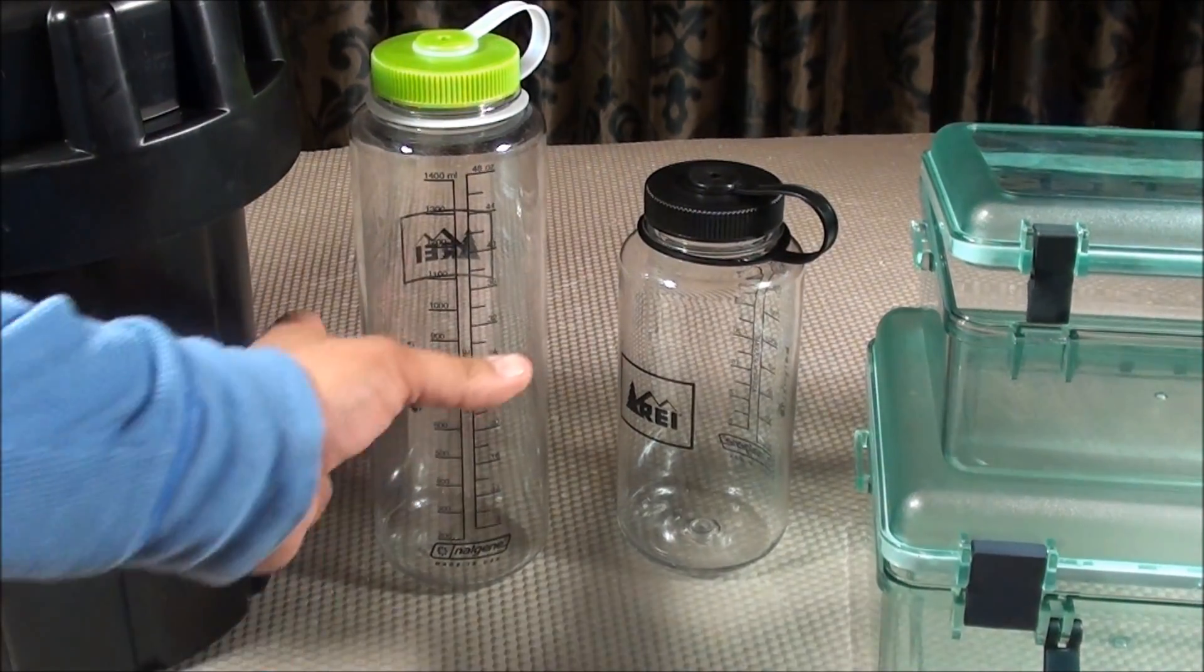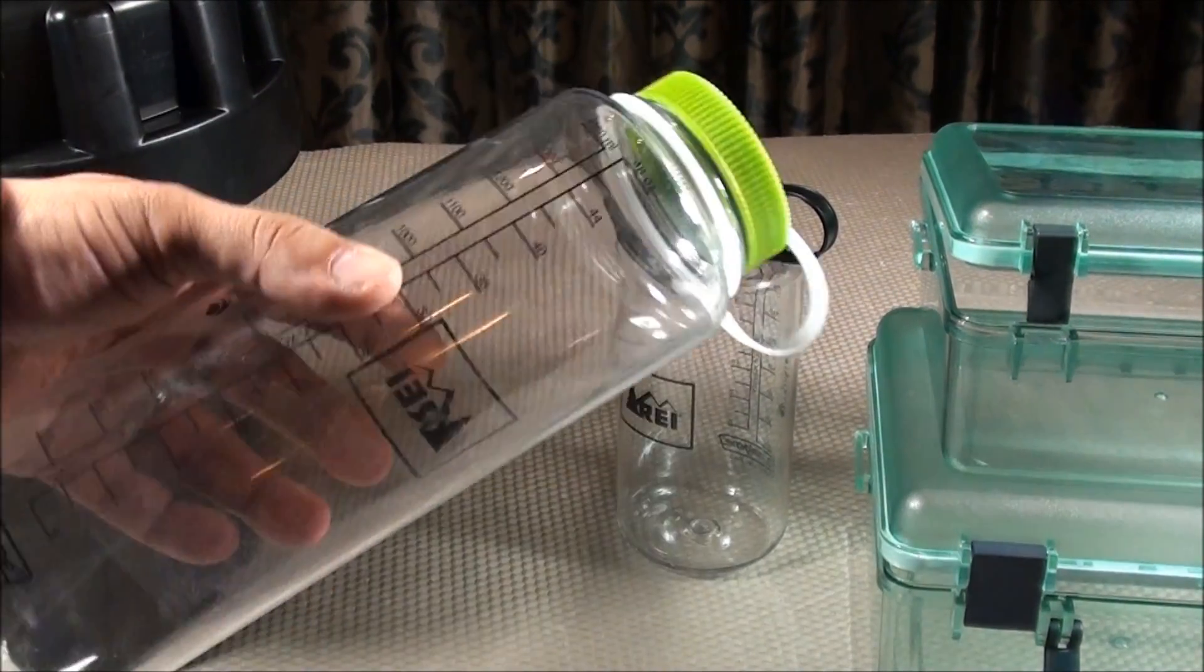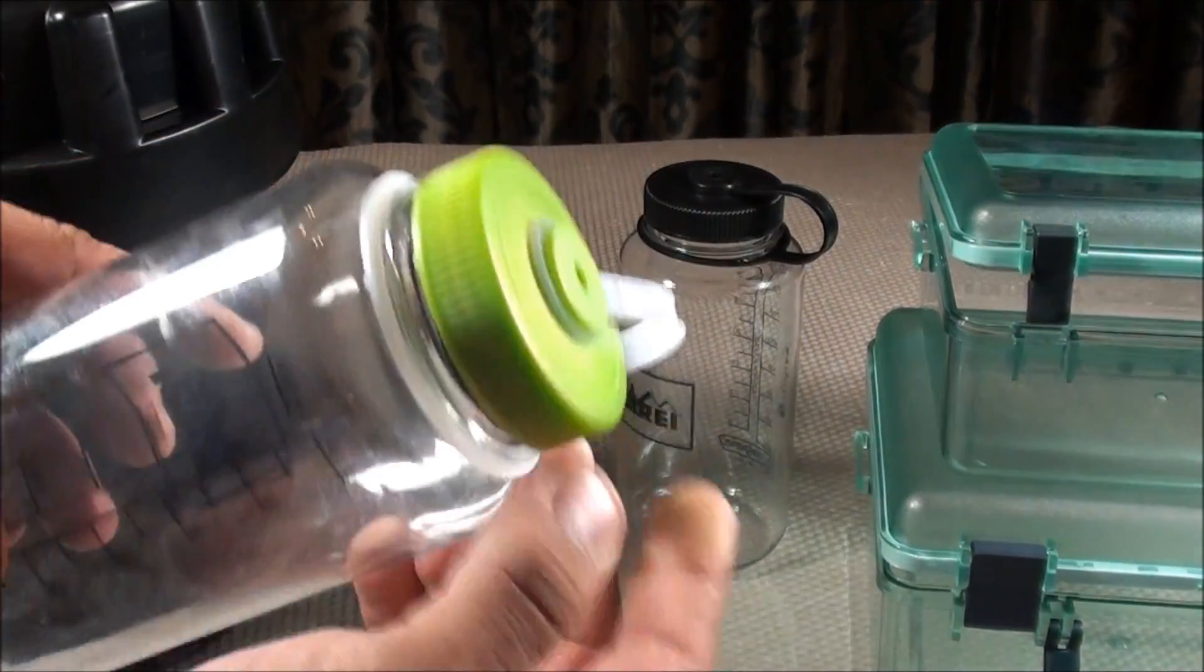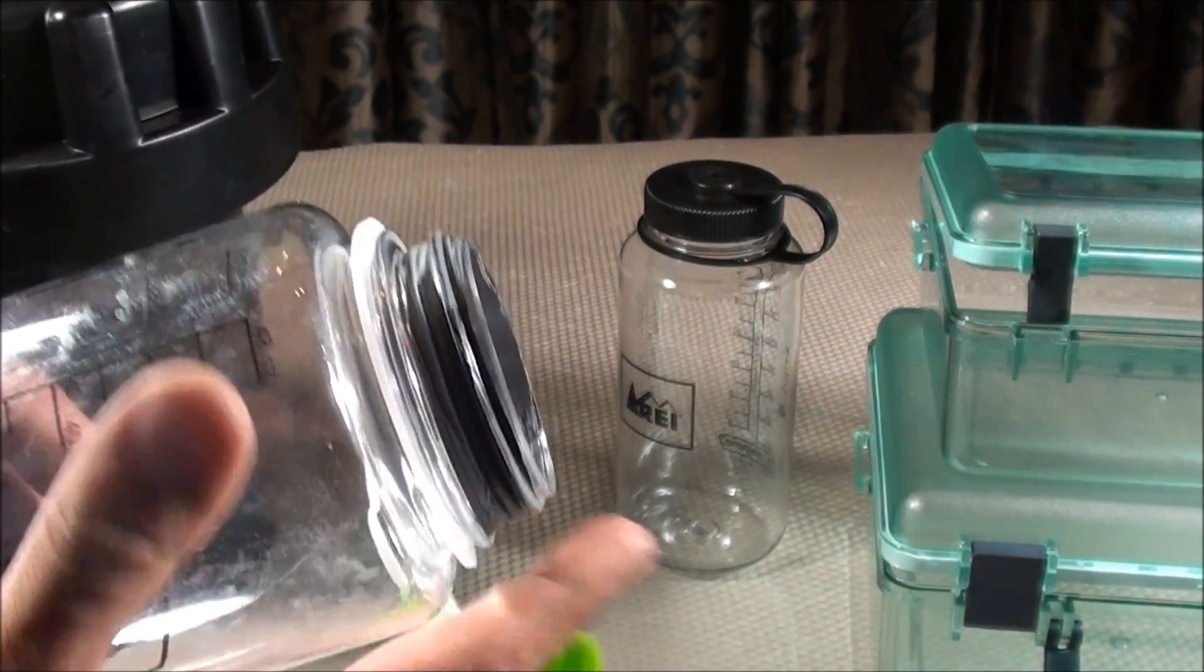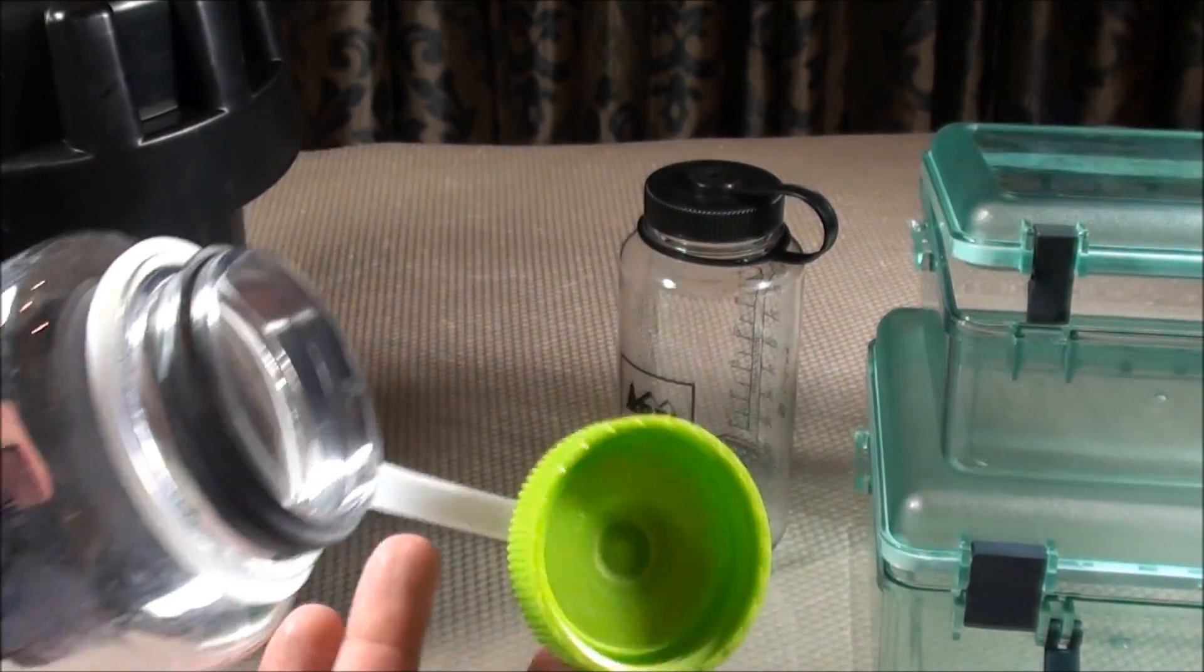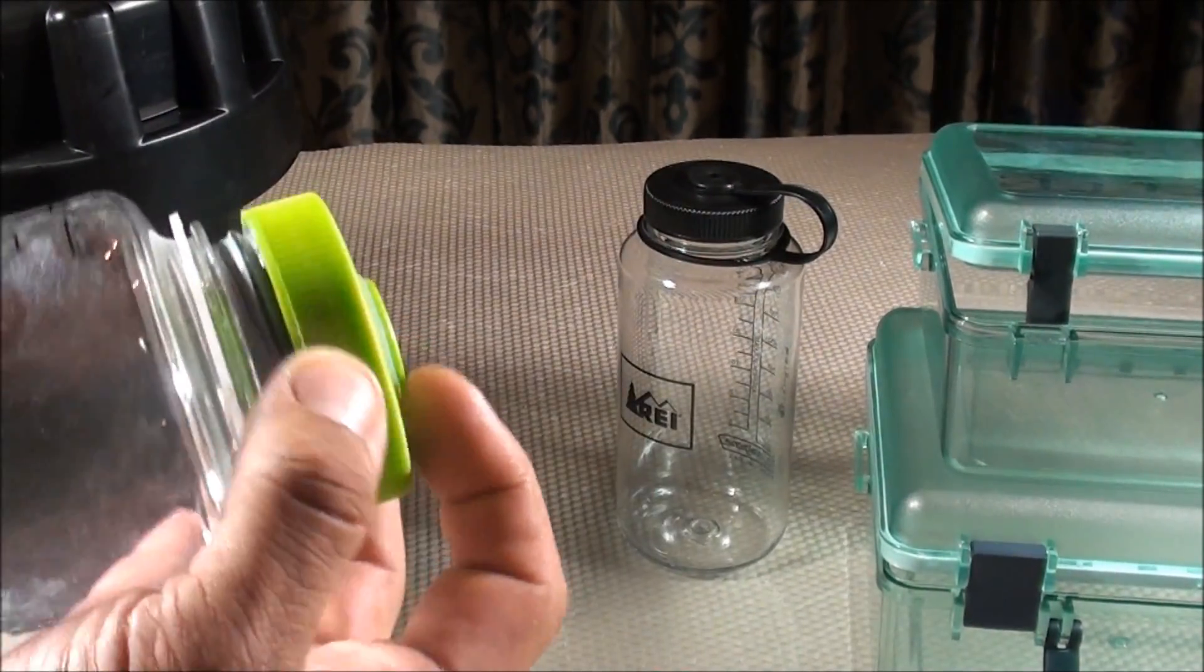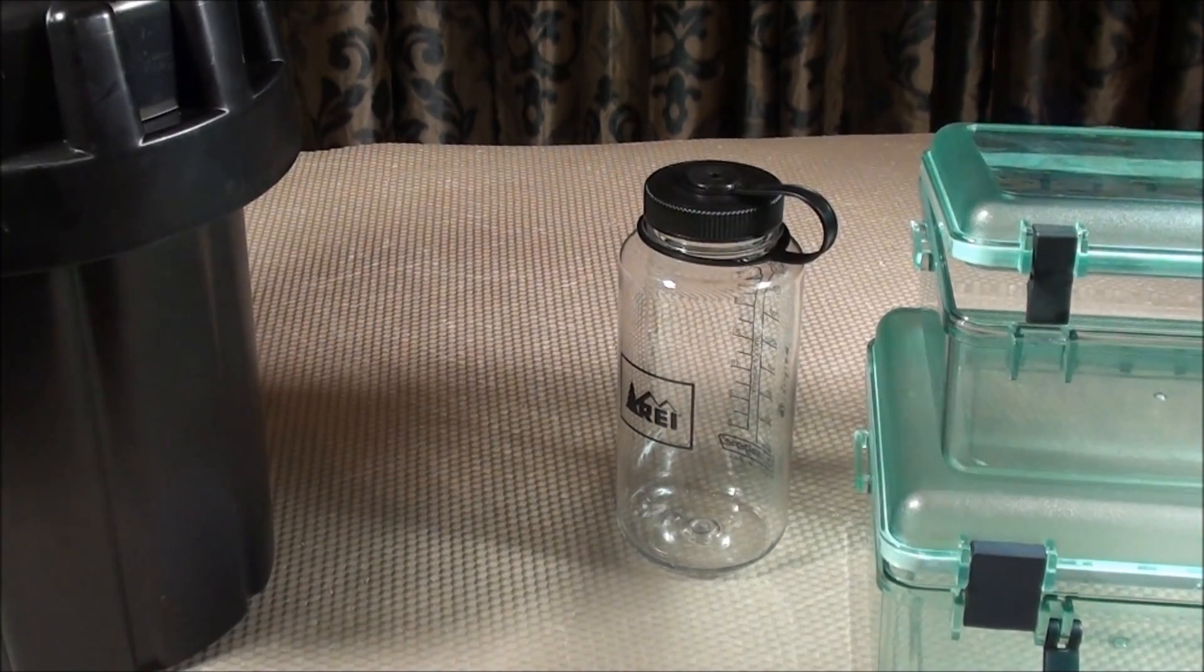So the same could definitely be said for the Nalgene water bottles. These are just plastic bottles. There's no metal on them. They could also be buried underground or in the water for as long as possible without any rust appearing on the outside of it which would deteriorate over time. But the same cannot be said for the two other types of containers.